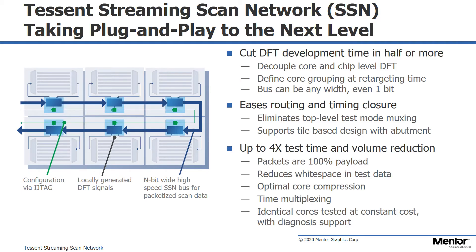SSN also contains many capabilities that help optimize test time and test data volume without having to increase DFT or planning effort. SSN has capabilities to automatically tune how much data is sent to each core to help reduce white space in the test data, and also has a capability to test multiple identical cores at constant cost while still supporting diagnosis. And SSN is also proven in silicon.